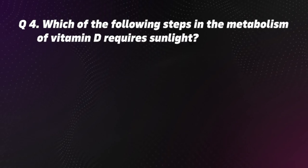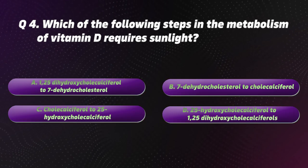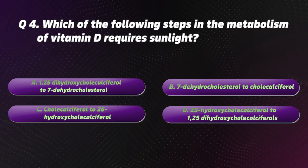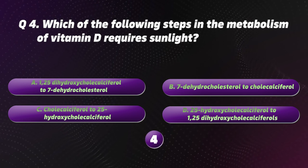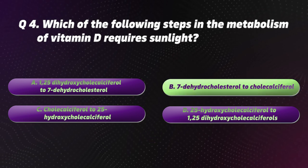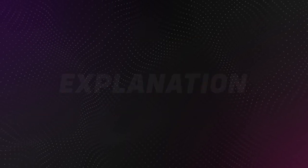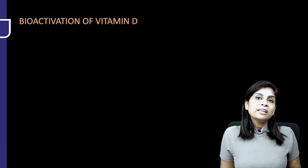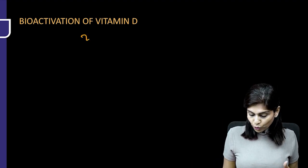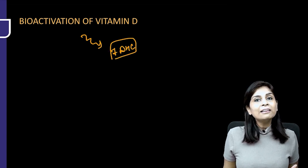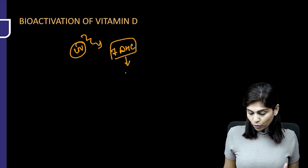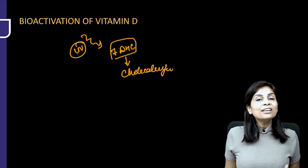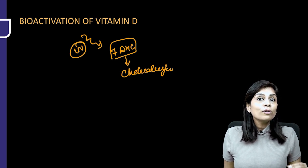Question 4. Which of the following steps in the metabolism of vitamin D requires sunlight? Options: A. 1,25-dihydroxycholecalciferol to 7-dehydrocholesterol, B. 7-dehydrocholesterol to cholecalciferol, C. Cholecalciferol to 25-hydroxycholecalciferol, D. 25-hydroxycholecalciferol to 1,25-dihydroxycholecalciferol. The correct option is B. Vitamin D can be endogenously synthesized by the action of UV light on 7-dehydrocholesterol in the malpighian layer of the skin epidermis. UV light opens one ring of cholesterol and converts 7-dehydrocholesterol into cholecalciferol.